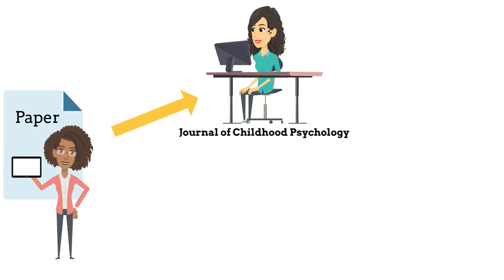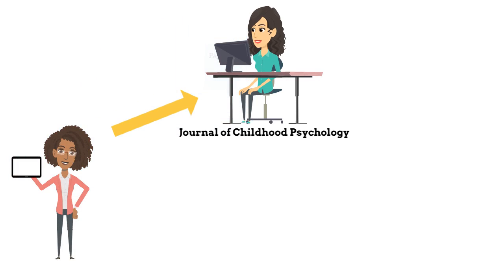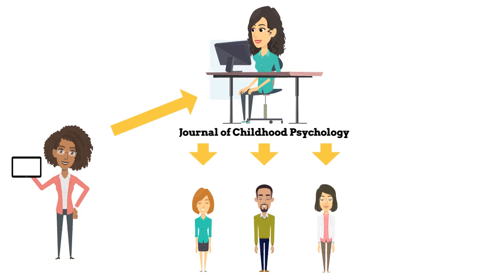When Professor Jordan has completed her paper, she sends it to the editor of a scholarly journal that publishes papers related to her research. The editor either rejects the paper or decides to submit it for peer review. The editor decides Professor Jordan's paper is strong enough to be sent on for blind peer review — meaning the editor sends it to other scholars who don't know who wrote the paper.